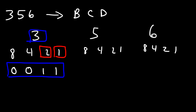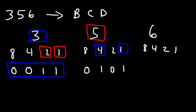Now to get 5, we'll need to add up 4 and 1. So replace the highlighted numbers with a 1, everything else with a 0. So 5 is represented by the 4-bit binary code 0101.